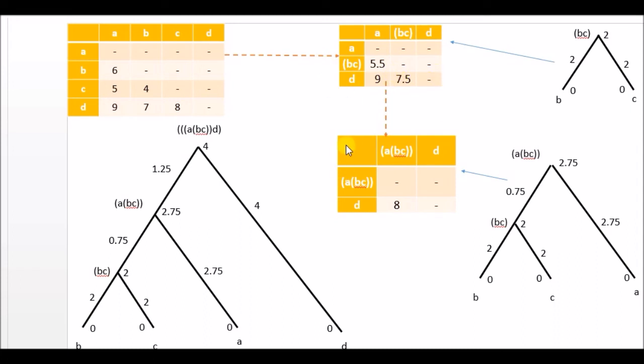So I added all three and divide by 3 this time because I count all three. So 5.5 plus 7.5 plus 9 is 24, and divided by 3 is 8.